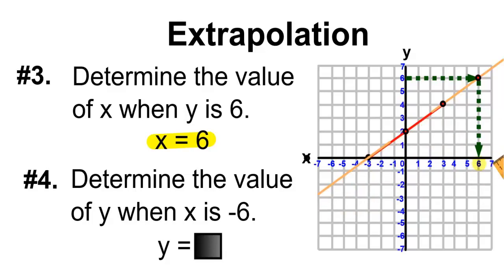And now we can determine y. Start at x. Give x a value of negative 6. Go down until you hit the line of data. Once you hit the line of data, go perpendicular to the right until you hit the y value, which is negative 2. So when x has a value of negative 6, y will have a value of negative 2.